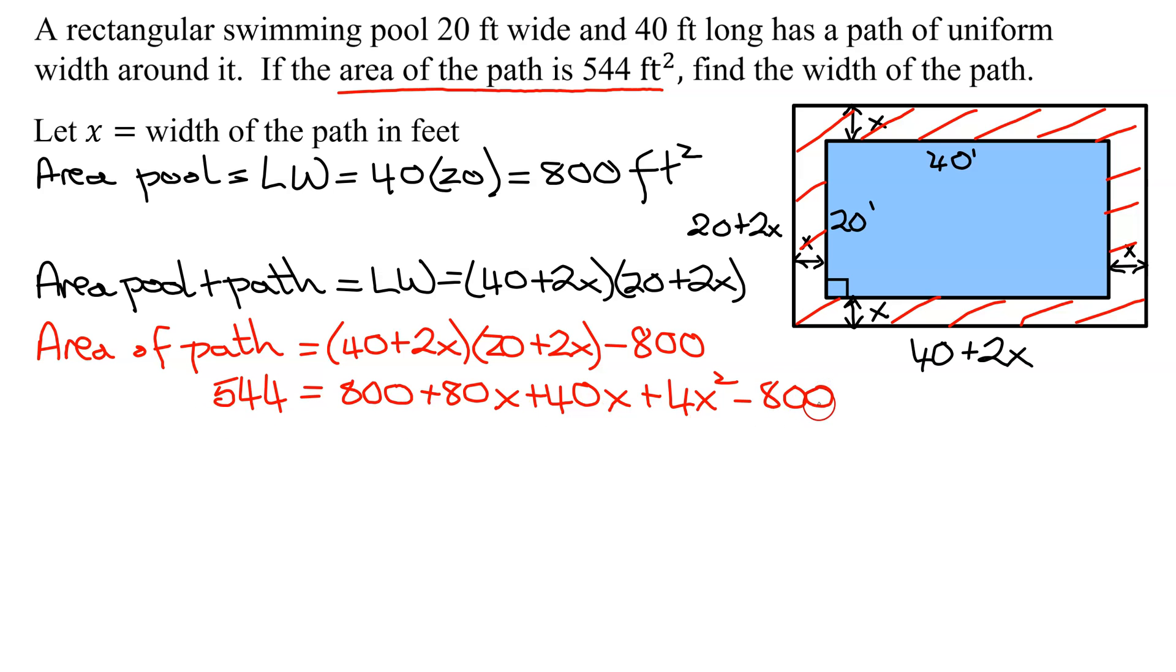So what kind of equation am I getting here? It looks like a quadratic equation. I have 800 minus 800 that adds to 0. And I'm going to collect everything on the right hand side. So I'm going to subtract 544 from both sides.